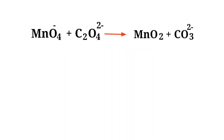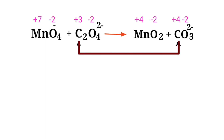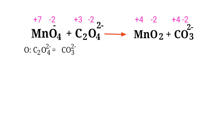First, figure out the reducing and oxidizing agents by the rules of assigning oxidation numbers. In the ion electron method, one reaction is divided into two half reactions, which are balanced and then added together. Carbon has a charge of plus three changing to plus four, so carbon is being oxidized. Manganese has a charge of plus seven changing to plus four, so manganese is being reduced.